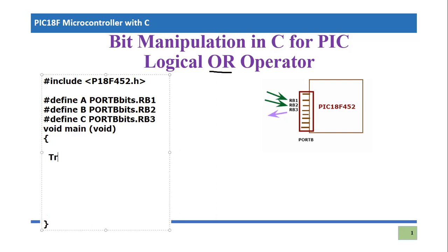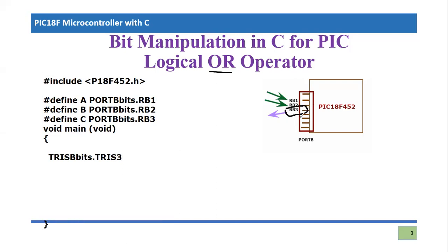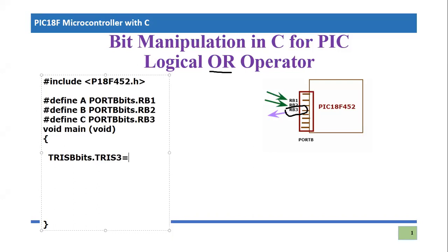We need to declare the output pin. For input/output declaration we need to work with the TRIS register. We are interested in Port B, and specifically the individual bit TRISBbits.TRISB3. We define RB3 as an output pin by simply initializing it: TRISBbits.TRISB3 = 0. Now the input and output port configuration is complete and we can develop our logic.